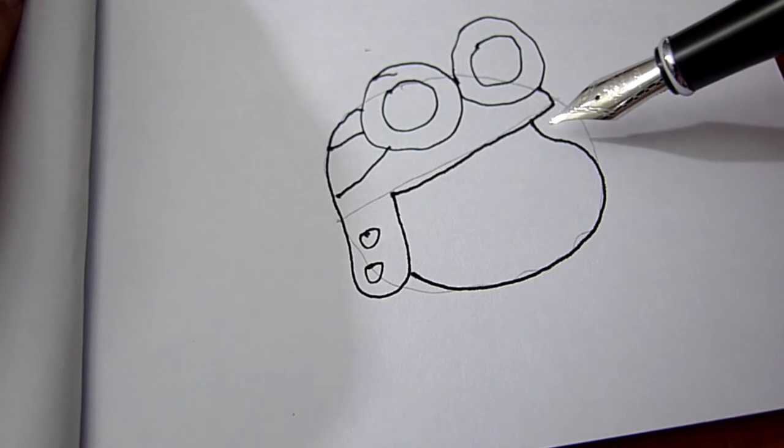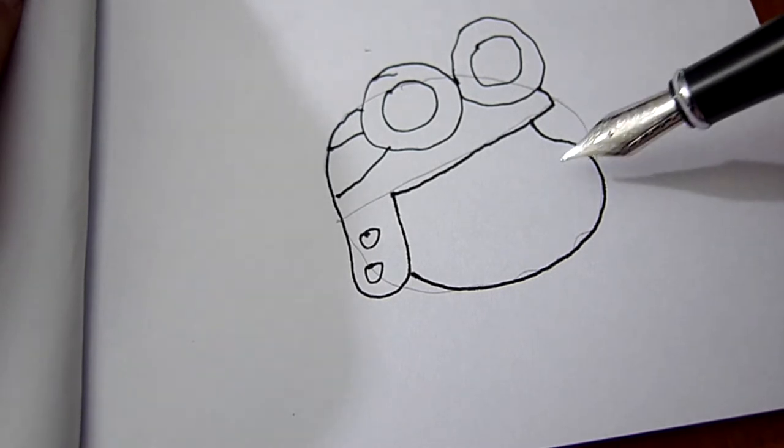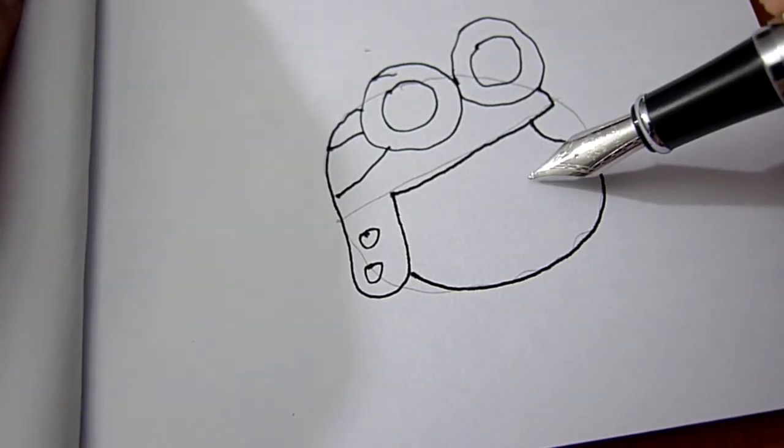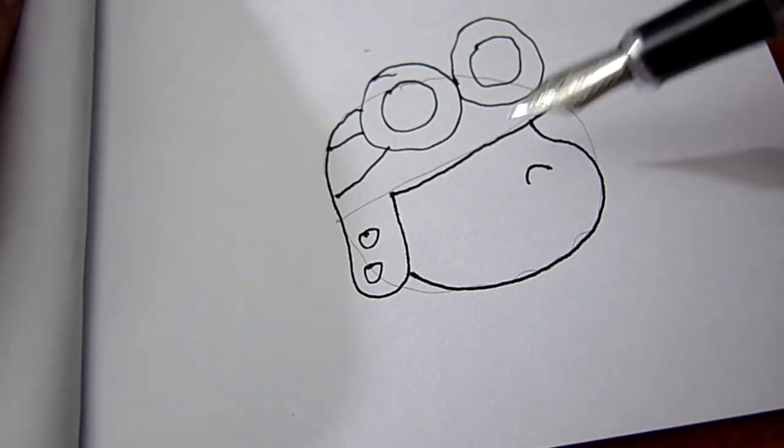And then for the nose, you put it where the pen is. Don't put it too low, don't put it too high. Put it where around the pen is, that's where the nose is.